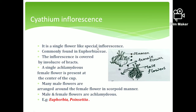The next special inflorescence is cyathium. This is a single-flower-like special inflorescence found in Euphorbiaceae family plants. In this inflorescence, there is an involucre of bracts — bracts unite to form a cup-like structure called involucre of bracts. Inside this cup-like inflorescence, there is one central aclamydeous female flower surrounded by several small male flowers. The male flowers are arranged in a scorpioid manner in a cluster.